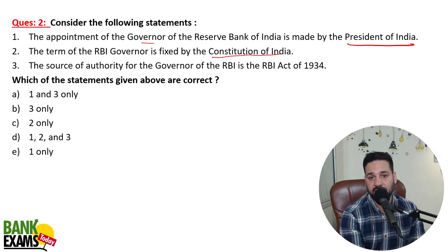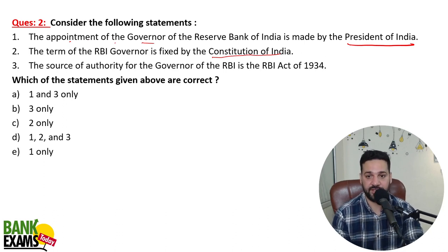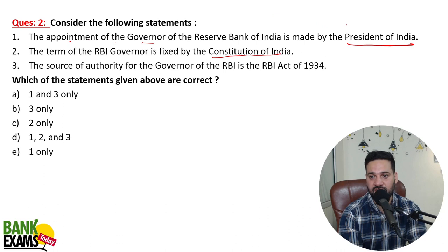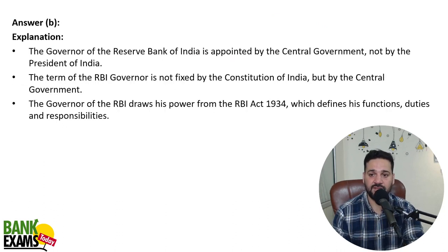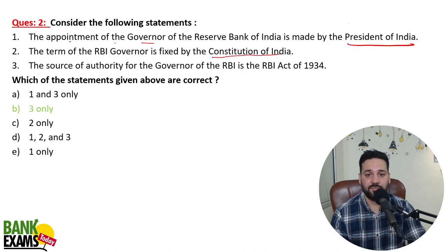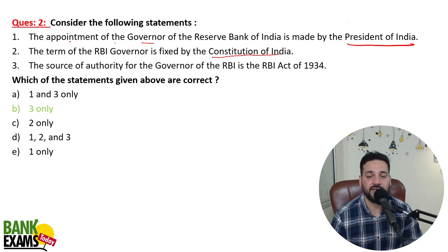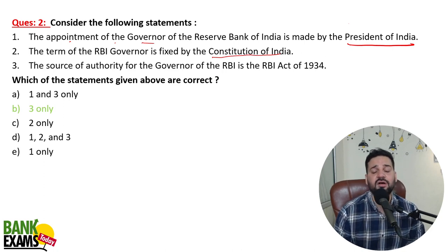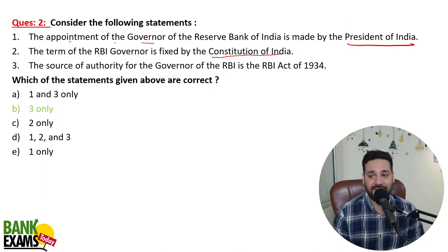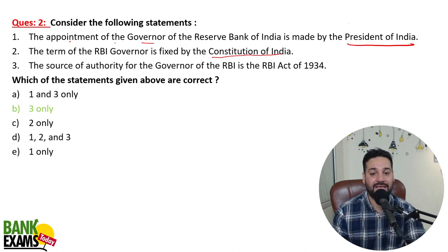You need to understand point number one: the appointment of Governor of RBI is made by the Government of India, not the President of India. The term is also decided by the Government of India, specifically the Central Government. So only the third statement is correct — the source of authority for the Governor of RBI is the RBI Act 1934. The first two are incorrect.